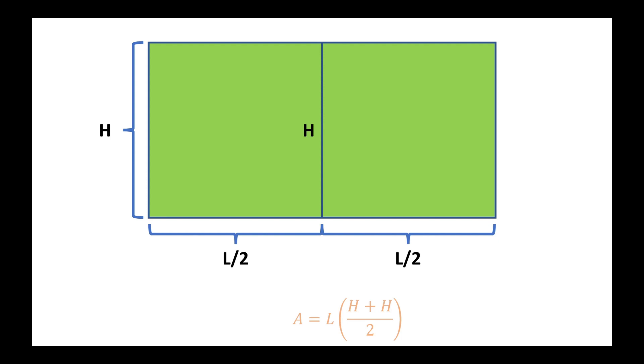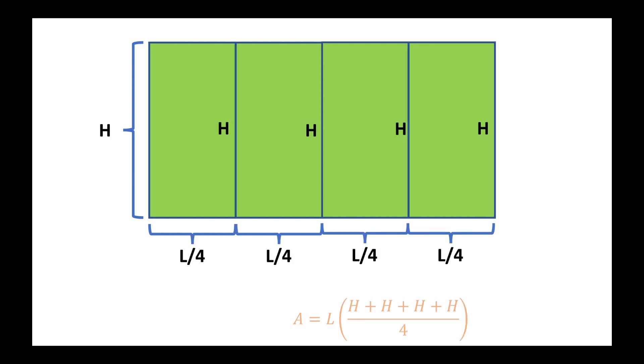As a matter of fact, it doesn't matter how many times we split up this rectangle. Because all the heights are the same, we're going to always yield the same area as a result of finding their arithmetic means and multiplying it by the rectangle's length.